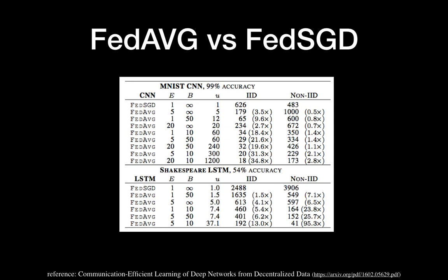In the real situation, each device has its own data — John has different behavior than Jane — so devices normally have non-IID data. We should focus on the non-IID results. FedSGD is sometimes better than FedAVG, which shows that hyperparameter tuning is very important. But FedAVG eventually achieves better performance. The numbers under non-IID represent the communication count — fewer communications means faster convergence. For MNIST CNN, FedAVG achieves 173 communication rounds, which is 2.8 times faster than FedSGD.